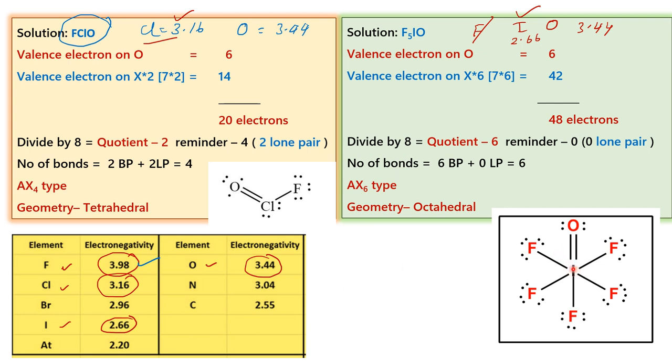Because iodine is the central atom, we have the fluorine surrounding it. This is the structure of F5IO. And actually, in this case, iodine is the central atom. So the geometry is octahedral.